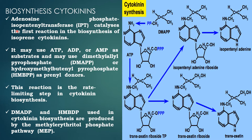Cytokinin biosynthesis: adenosine phosphate isopentenyl transferase catalyzes the first reaction in the biosynthesis of isoprene cytokinin. It may use ATP, ADP, or AMP as a substrate and may use dimethylallyl pyrophosphate, also represented as DMAPP, or hydroxymethylbutenyl pyrophosphate, also called HMBPP, as prenyl donor. This reaction is a rate limiting step in cytokinin biosynthesis.